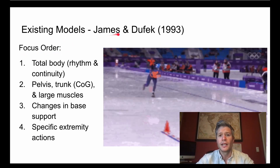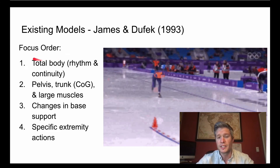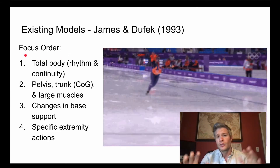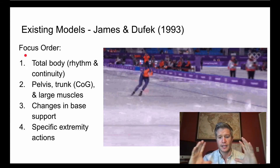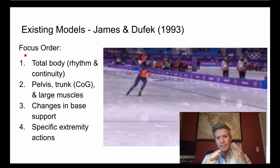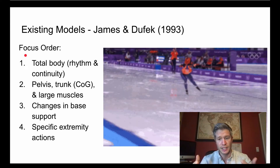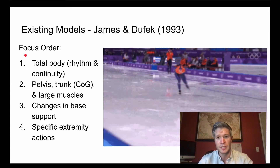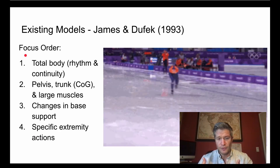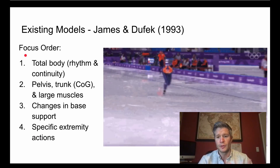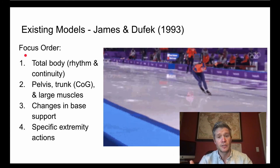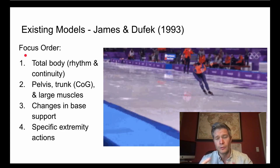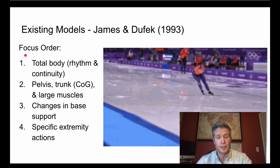The order the James and Dufek model suggests for watching movements is: first, just total body rhythm and continuity — big picture, what does the movement look like generally? When looking at the speed skater, we can see a natural rhythm between left and right sides, flow, continuity, and repetition. Already we can start observing certain things. If that rhythmicity between left and right sides wasn't there, that might be a point for intervention.